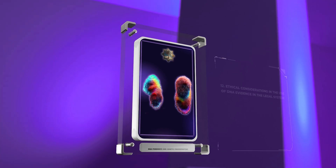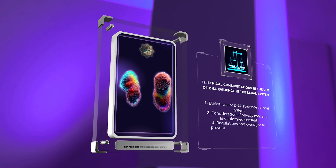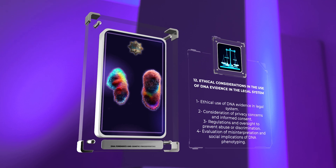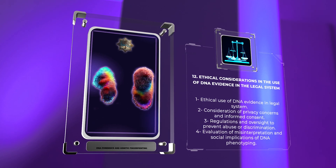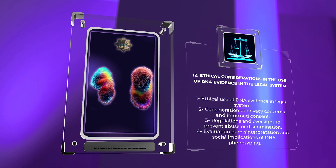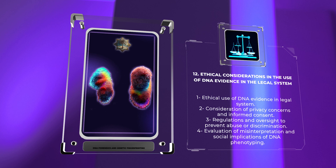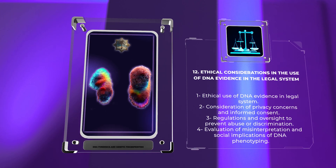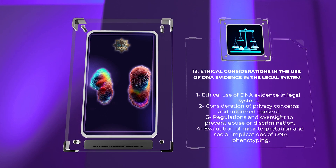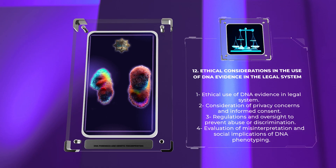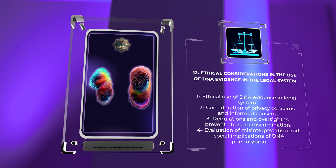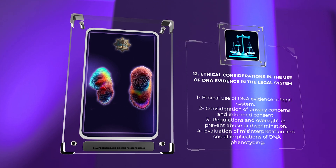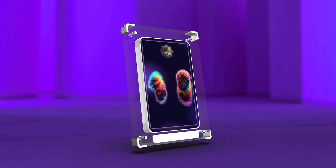The ethical use of DNA evidence in the legal system requires careful consideration of privacy concerns and informed consent. Regulations and oversight are necessary to prevent abuse or discrimination. Misinterpretation and potential social implications of DNA phenotyping must be evaluated. Transparency and scientific integrity are vital for fair outcomes.